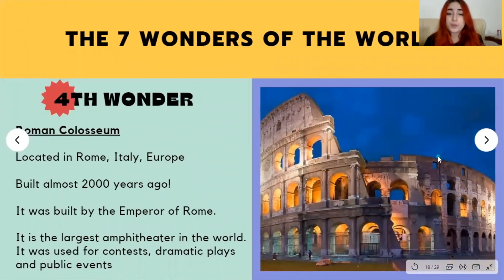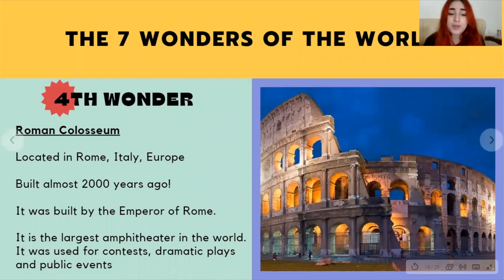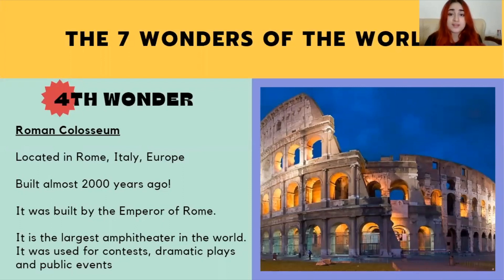The fourth wonder of the world is the Roman Colosseum, located in Rome, Italy, in the European continent. It was built almost 2000 years ago by the Emperor of Rome at the time. It is the largest amphitheater in the world and was used for contests, dramatic plays, and public events.